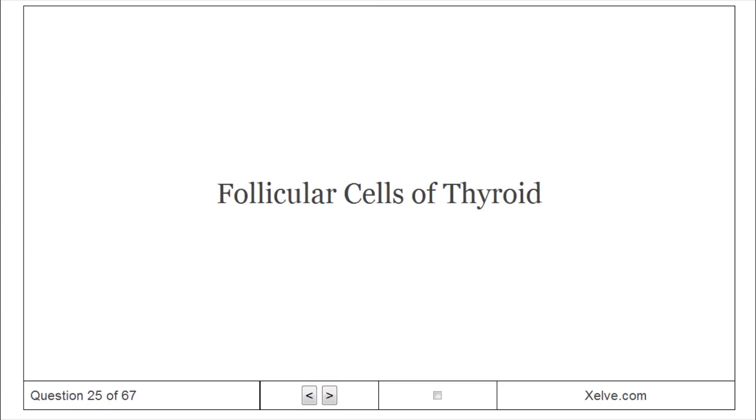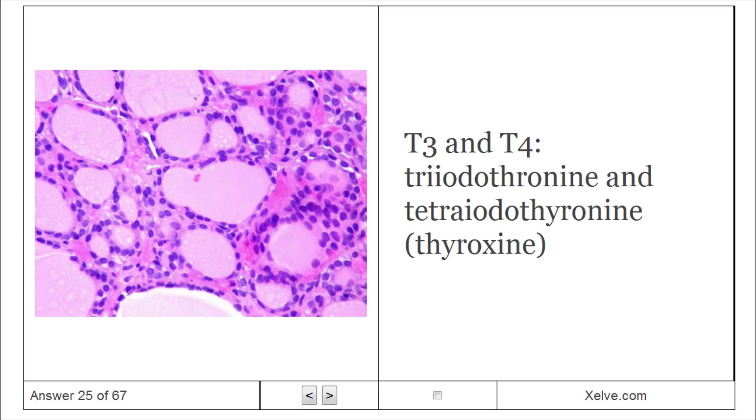Follicular cells of thyroid produce T3 and T4: triiodothyronine and tetraiodothyronine, or thyroxine.